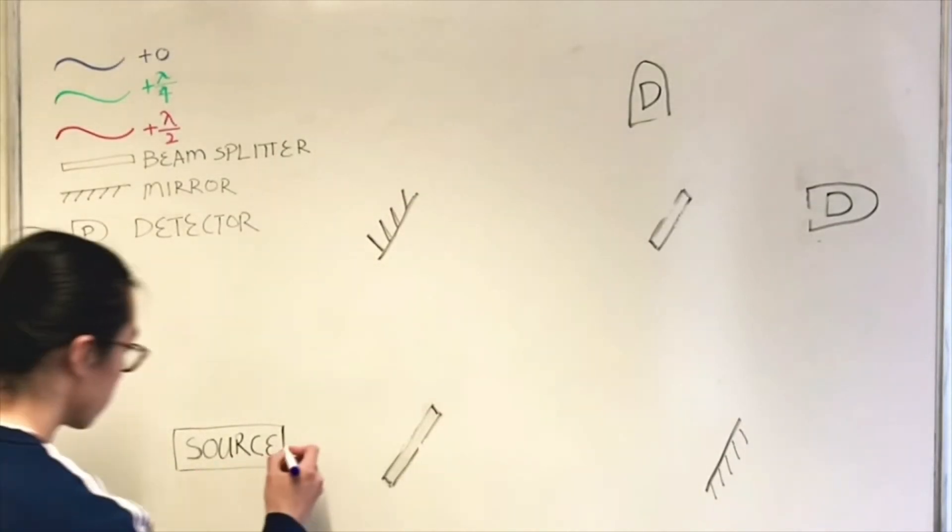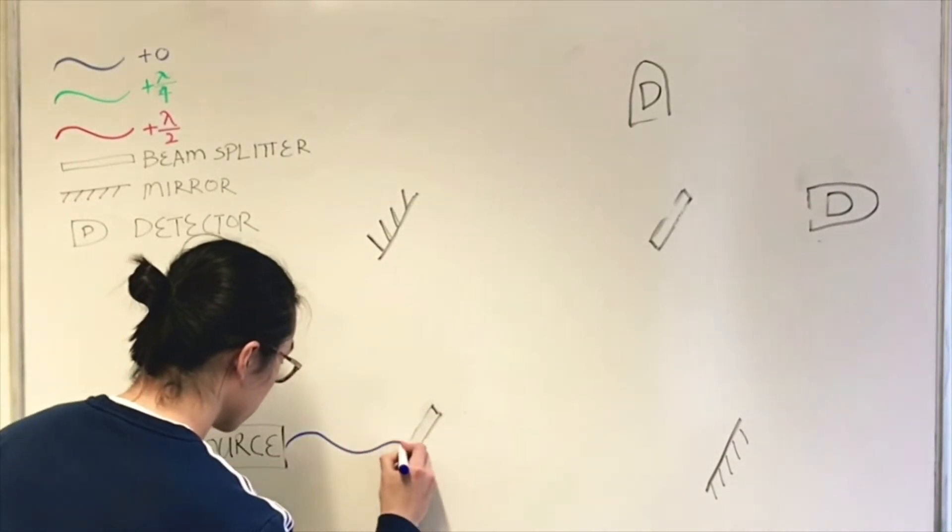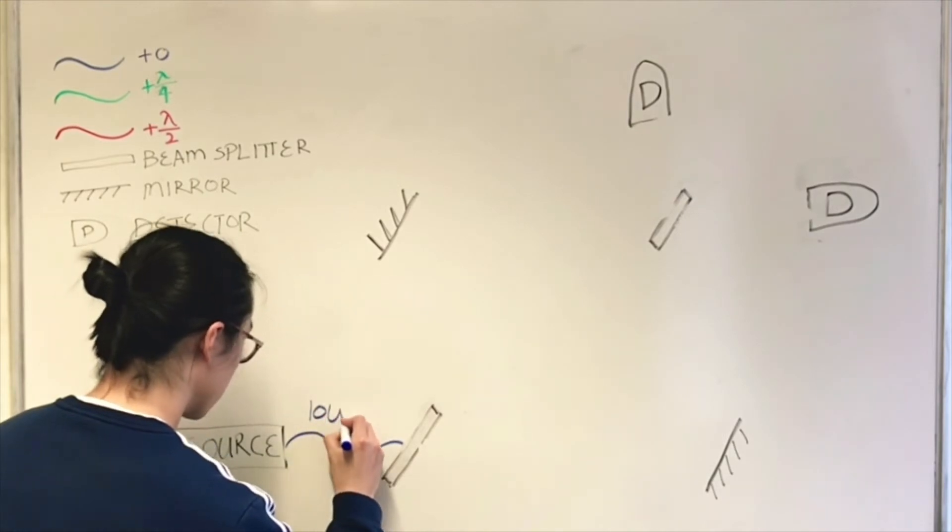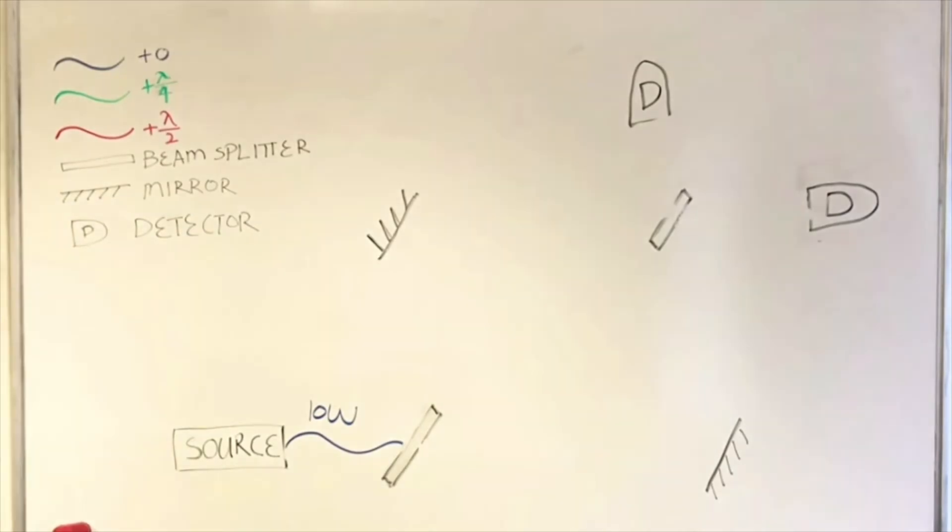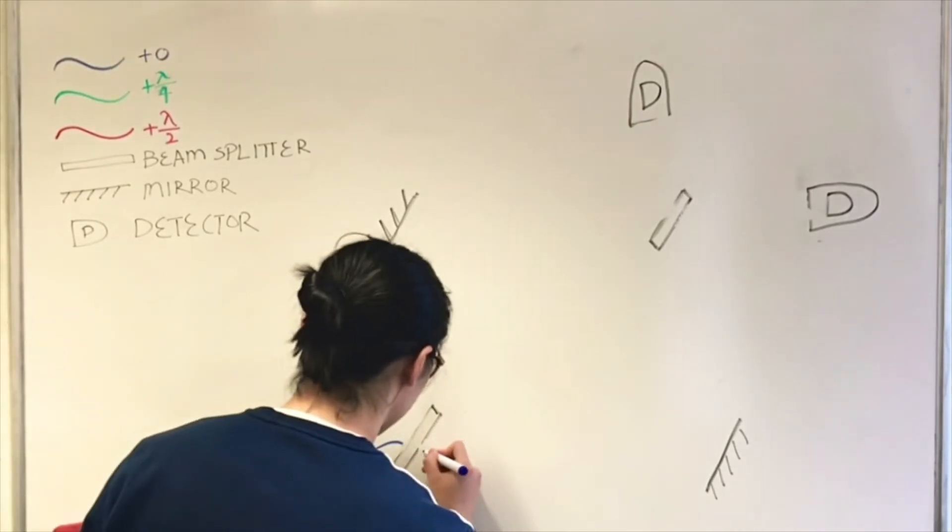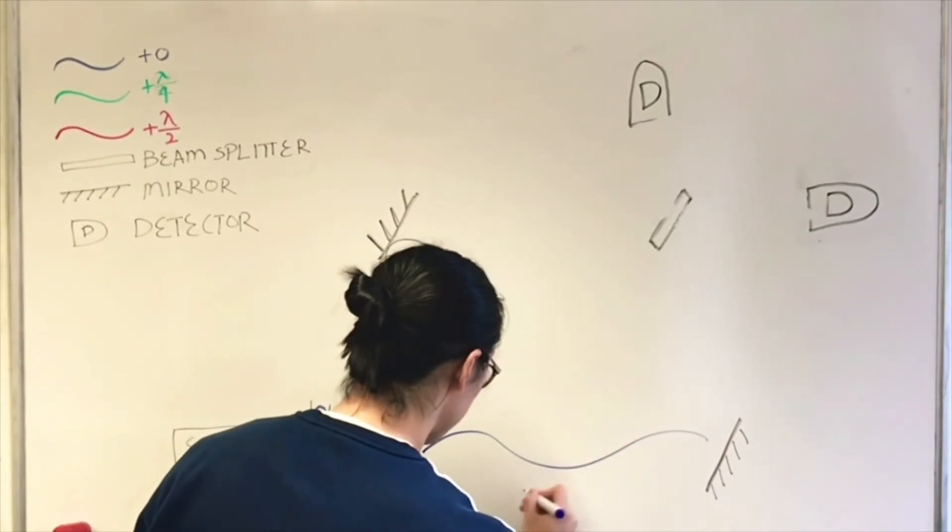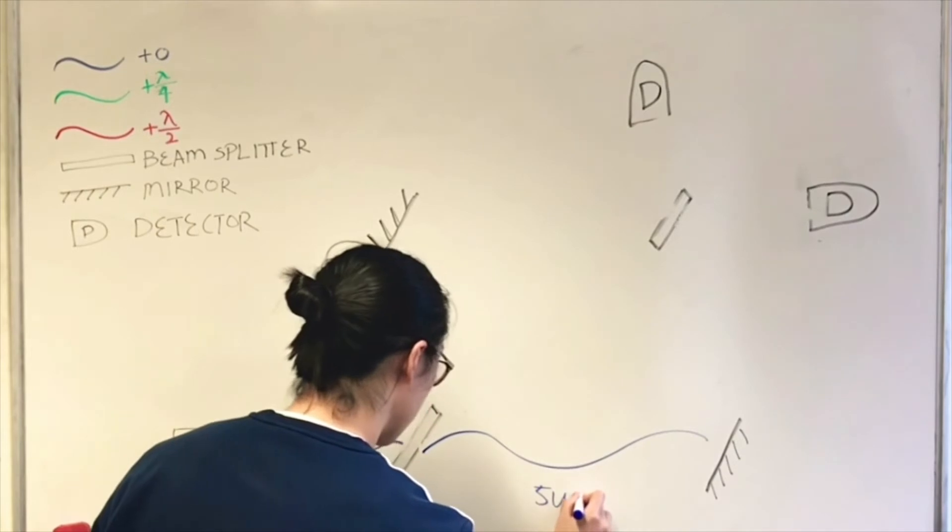Let us first look at the top detector. The light source will emit a 10 watt light wave. The light wave goes through the first beam splitter. The wave is then split into two separate 5 watt waves. One goes through and the other gets reflected.